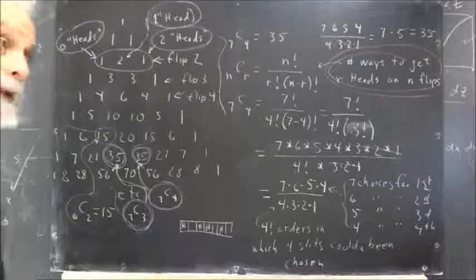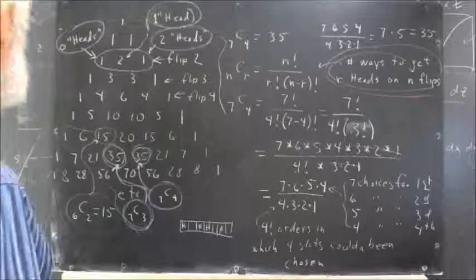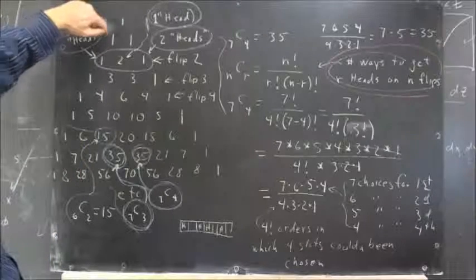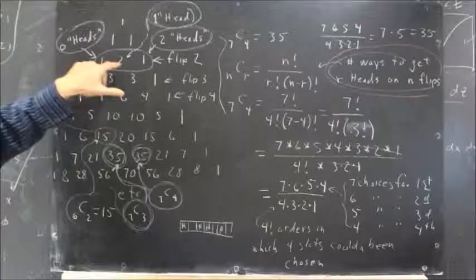Now we want to digress back to Pascal's Triangle. To write Pascal's Triangle out, we start with a 1, then a 1 and a 1. And then we get 1, 2, 1.